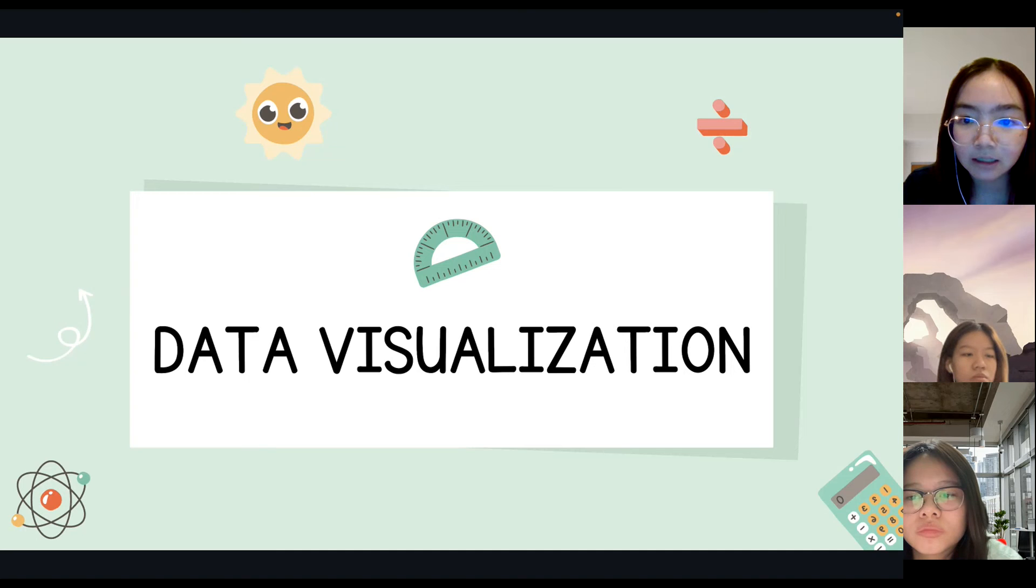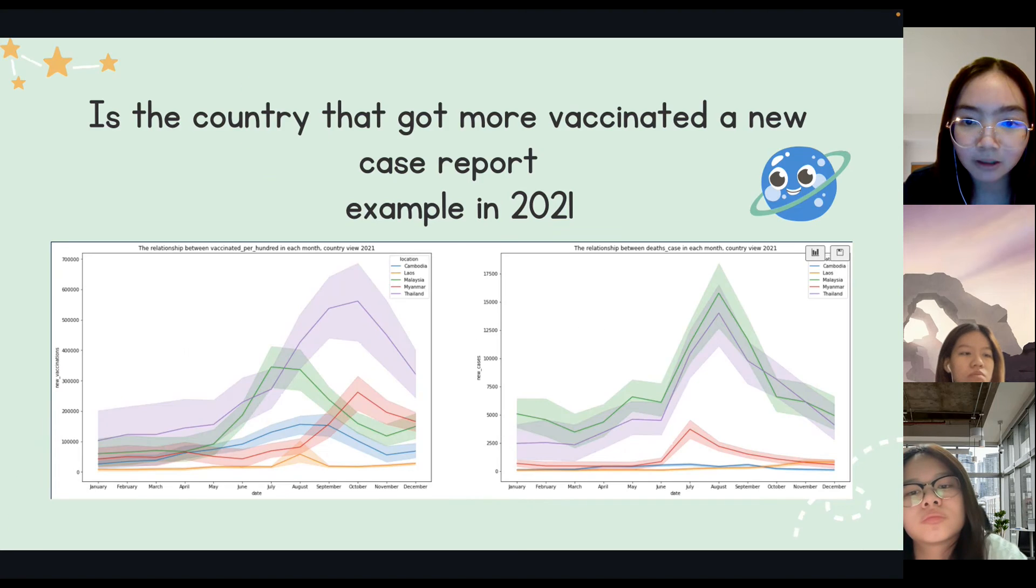For the data visualization, there are four factors to focus on including vaccination per 100, death cases, stringency index, and new cases. We plot the line chart to see the relationship in each month to compare the value in each month. As can be seen in the left-hand side graph, the relationship between vaccinated in each month in the year 2021 shows that the number in each country increased from July to October and dropped down after November. And on the right-hand side, there is a relationship between the high value of death cases in August, because this is the early stage of vaccination for people. However, a month after people got vaccinated, the number of death cases decreased.